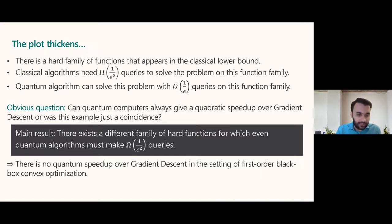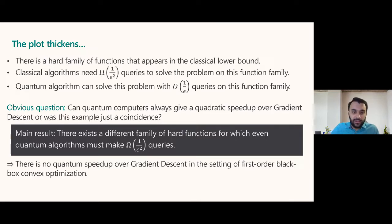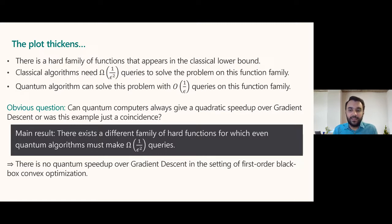So it's a negative result. As I said at the beginning, I like investigating problems to see whether there's a quantum speedup. Regardless of the outcome — whether you discover a new quantum speedup or prove there is no quantum speedup — both are very good outcomes. The worst outcome is not being able to conclude anything. Now I know I won't spend time trying to improve quantum algorithms in this exact setting of first-order black-box convex optimization, though speedups may exist in other settings.